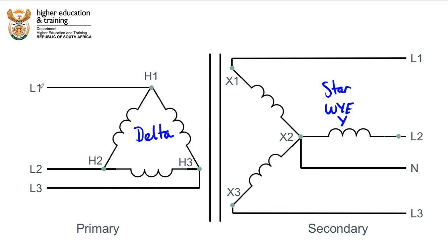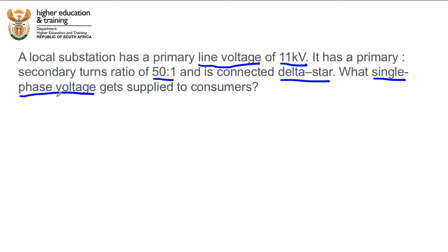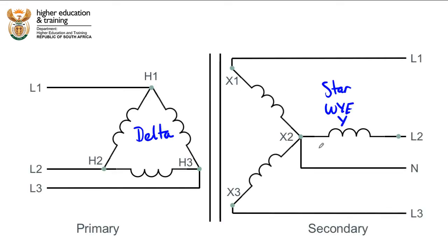These labels are arbitrary — it doesn't matter how you order them, but it's a good idea to label them line 1, line 2, line 3 on both sides. On the secondary side, because it is in star formation, it has a neutral point. And since we are interested in the single phase voltage applied to customers, this neutral point is going to be quite important for us.